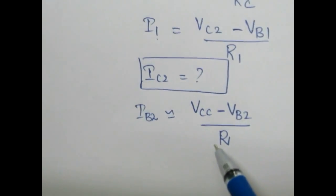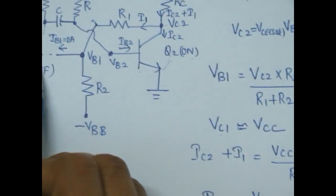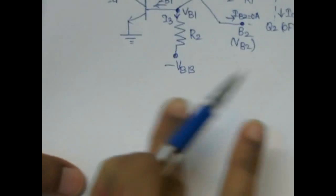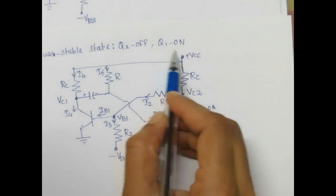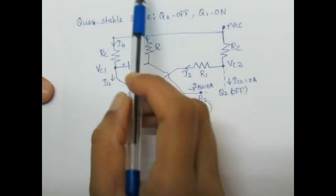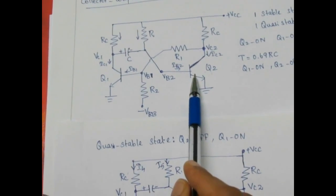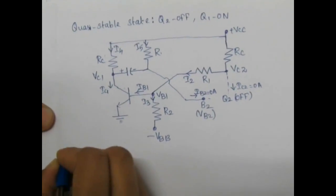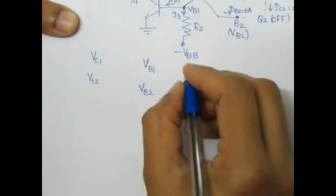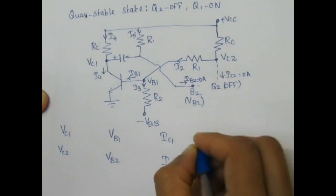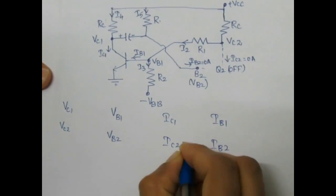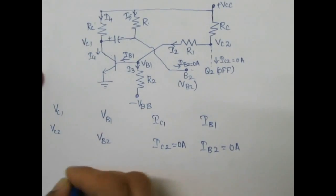These are the stable state voltages and currents when Q2 is on and Q1 is off. Next, we find the quasi-stable state voltages and currents. In quasi-stable state, Q2 is off and Q1 is on, triggered by giving a negative pulse to the base of Q2 transistor. We have to find VC1, VC2, VB1, VB2, IC1, IC2, IB1, and IB2. Since Q2 transistor is off, its collector current and base current are equal to 0 ampere.